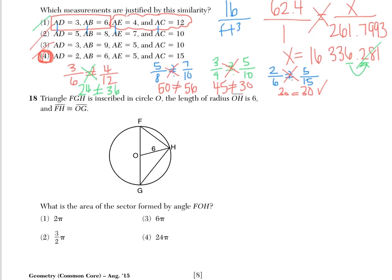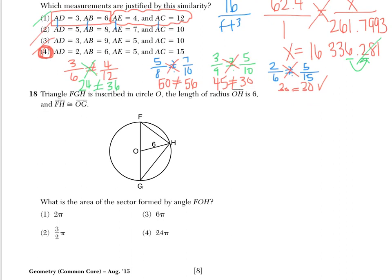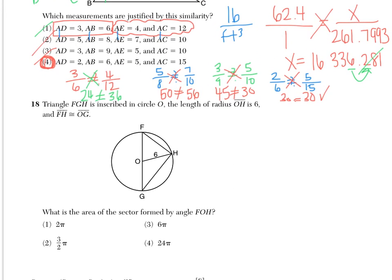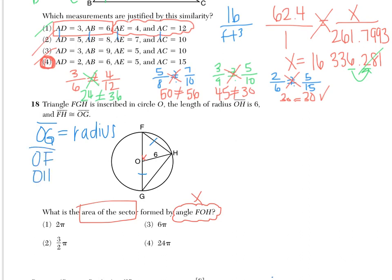Number 18 says triangle FGH is inscribed in circle O. The radius OH is 6, and FH is congruent to OG. We need to find the area of the sector formed by angle FOH. Going back to mark up the diagram: OH is 6, and OG is actually a radius, as are OF and OH. Since all radii equal 6, and OG is congruent to FH, then FH is also 6. This tells us triangle FOH is equilateral with all sides equal to 6.